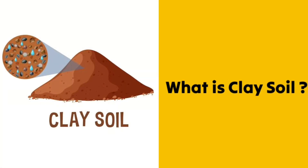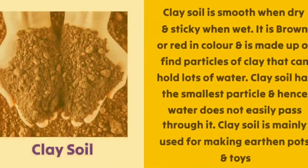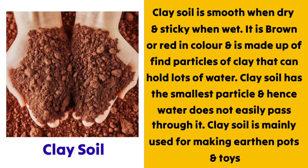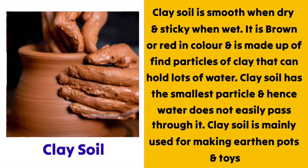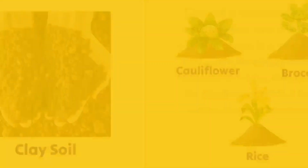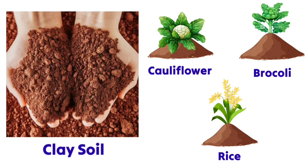Clay soil is smooth when dry and sticky when wet. It is brown or red in color and is made up of fine particles of clay that can hold lots of water. Clay soil has the smallest particles, and hence water does not easily pass through it. Clay soil is mainly used for making earthen pots and toys, as seen in the picture. Plants like cauliflower, broccoli, and rice grow well in clay soil.